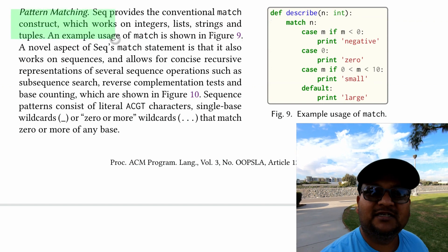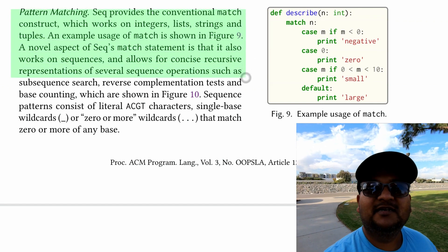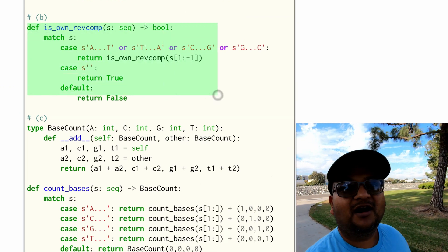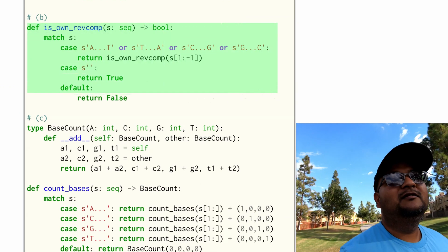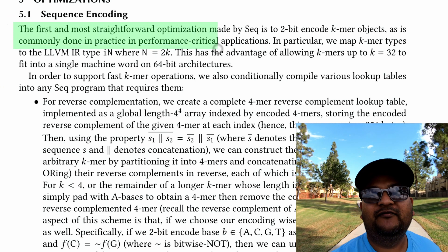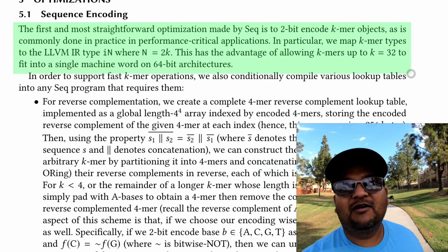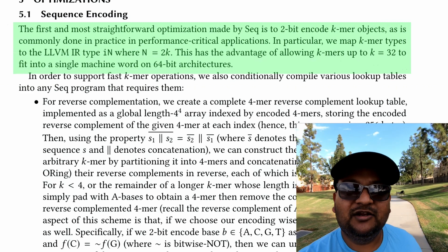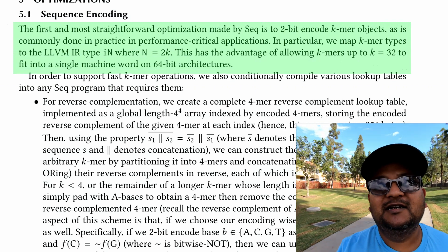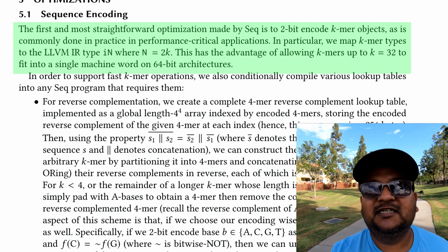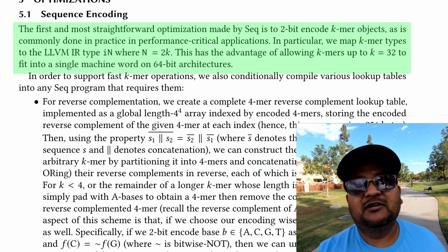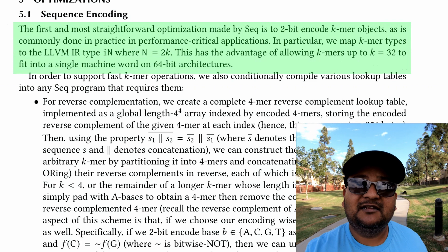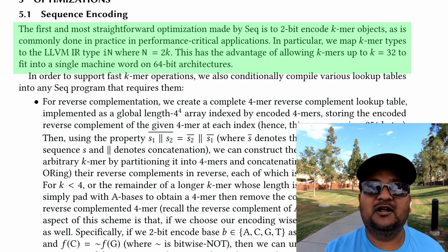Seq also has pattern matching on strings, which makes it easy to express logic on particular patterns of DNA sequences. Since there are only four bases, each element of a sequence needs only two bits to represent, meaning that on 64-bit computers you can express K-mers of up to length 32 in a single word.